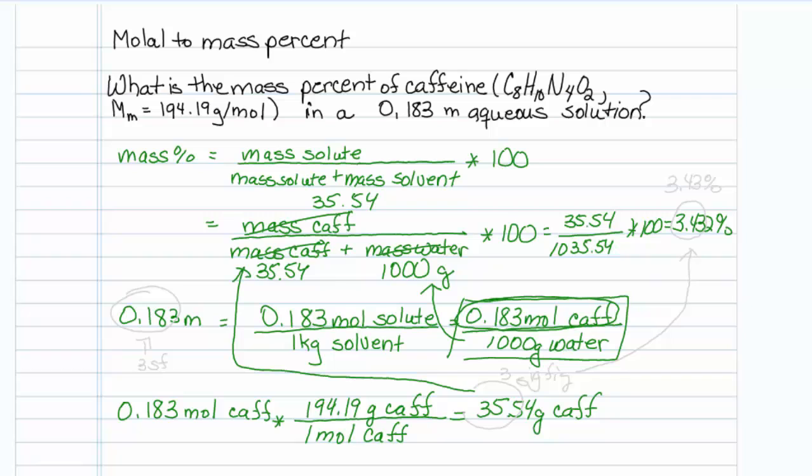Now about the sig figs. The value that we're given has 3 sig figs, which means I really only have my gram amount to 3 sig figs, which means my answer here can really only be to 3 sig figs, or 3.43 percent. That's all you do.